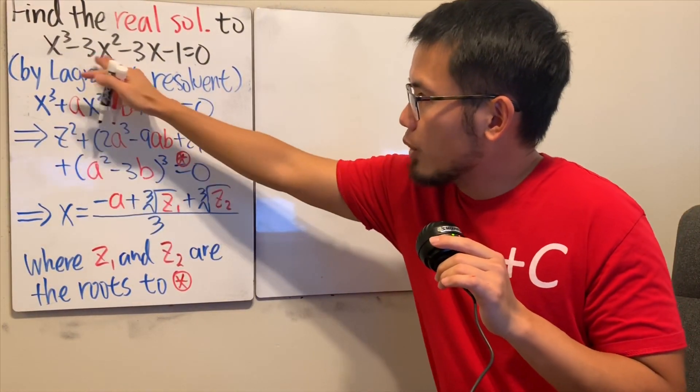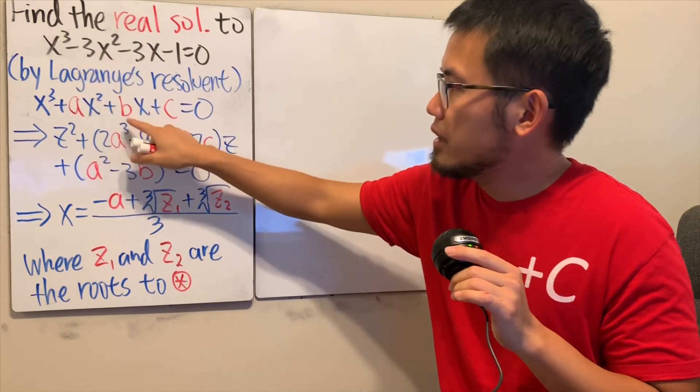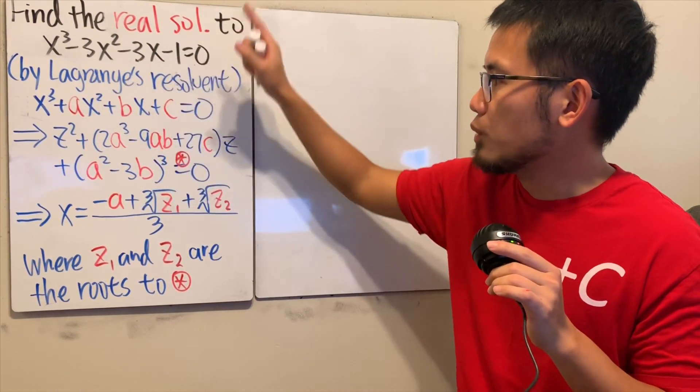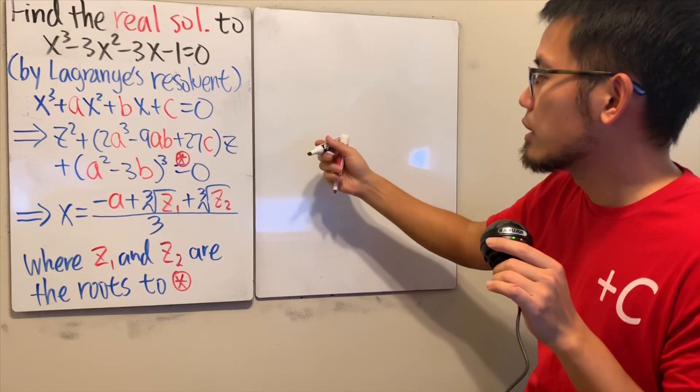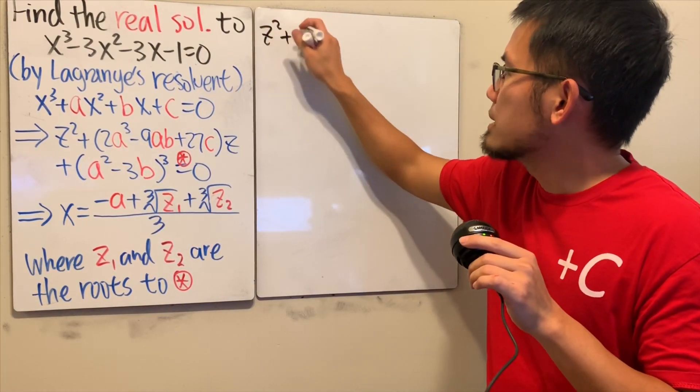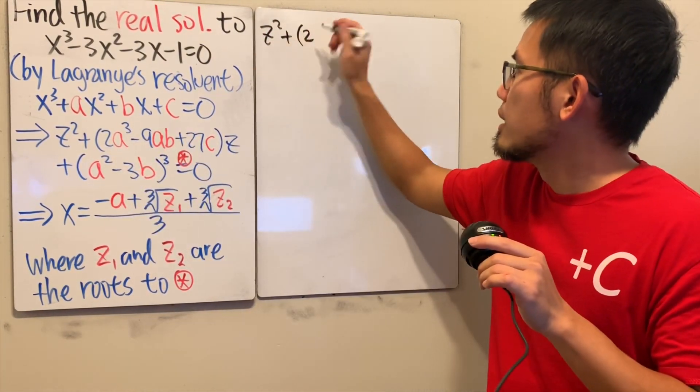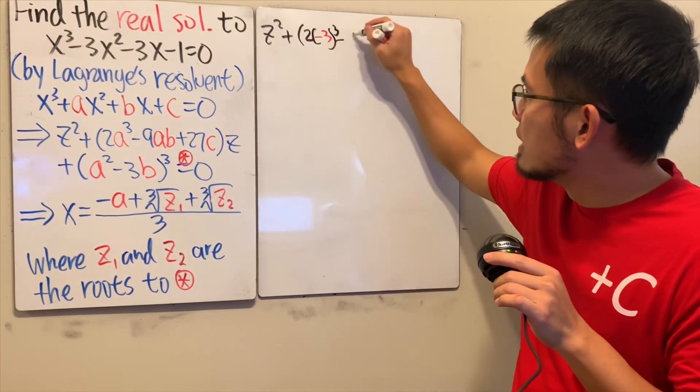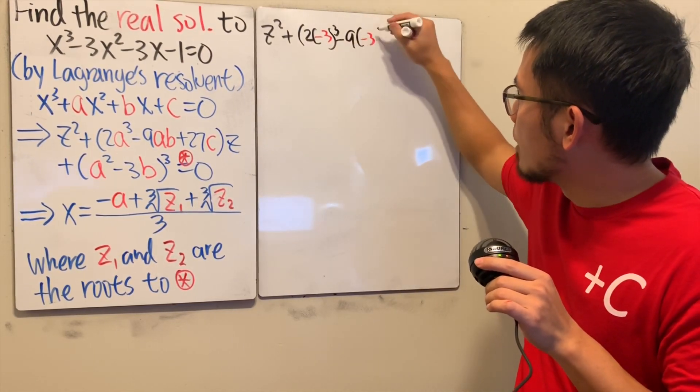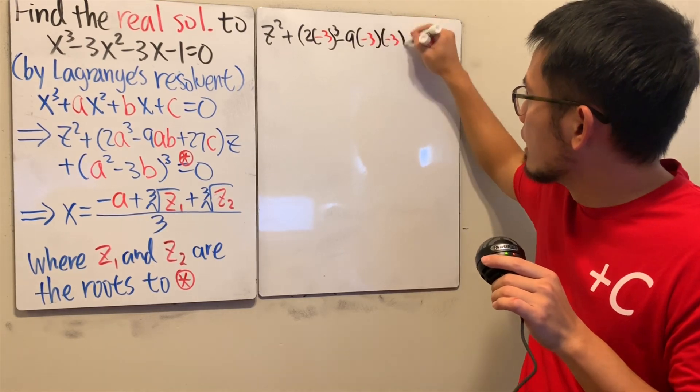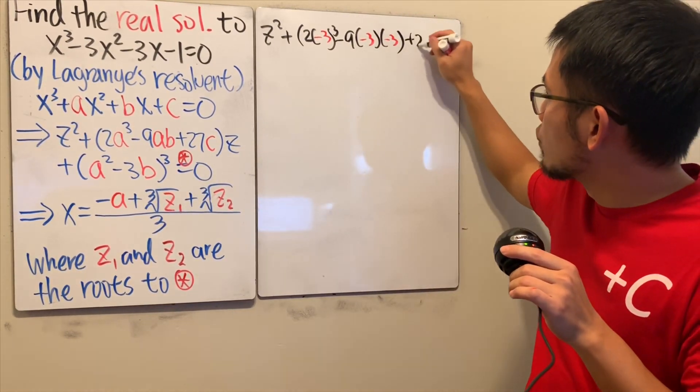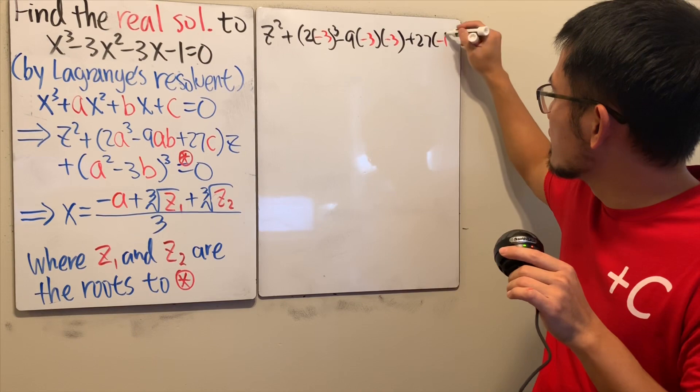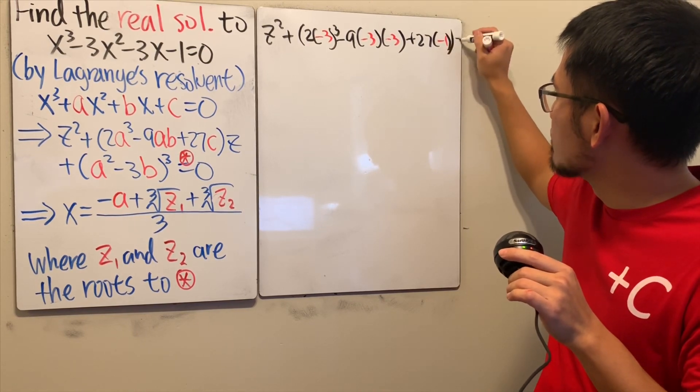Well, in this question here, A = -3, B = -3, and C = -1. I will just change that right here. So we have C² + (2A)³ - 9AB, which are both -3. And then we have to add 27C, which is -1, and then don't forget we have to multiply by Z.